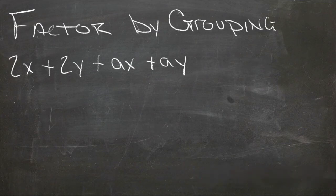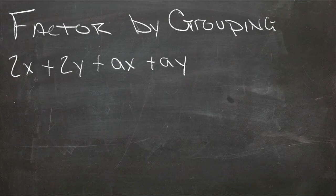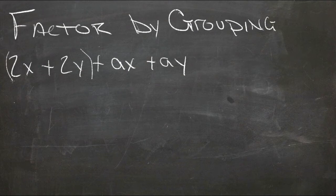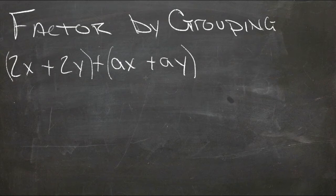Here, if we take a look at this example, we see that we have 2x plus 2y, and each of those terms has a 2 in it, and we have ax plus ay, and each of those terms has an a in it.